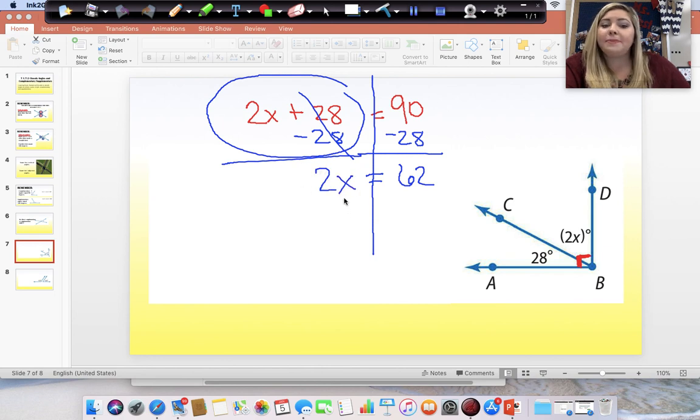Positive 28 minus 28 cancels and we are left with 2x on the left. To solve, you need to do the opposite of what's happening to the variable. Right now, the variable is being multiplied by 2. So, we want to do the opposite and divide both sides by 2. 2 divided by 2 is 1 and 1 times x is x. And, 62 divided by 2 gives us 31. So, our answer is 31.